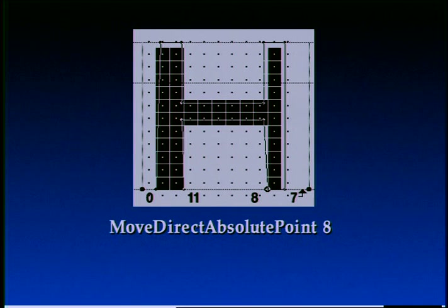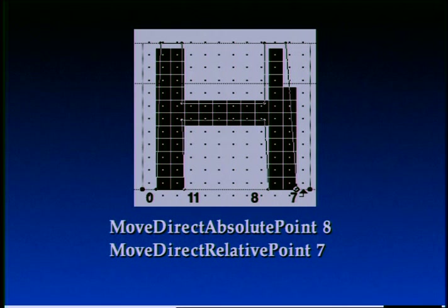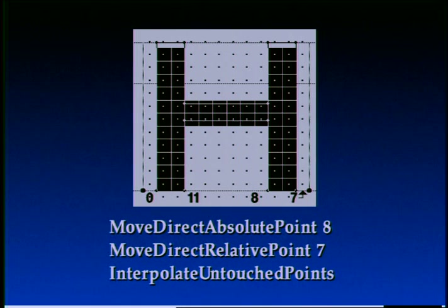Let us now look at how we solve the H with TrueType instructions. Set Vectors to Coordinate Axis X means that the next instructions will work on the x-coordinates of the control points. Move Direct Absolute Point 0 moves point 0 in the x-direction to the next grid boundary — equivalent to rounding the x-coordinate of point 0. This instruction also designates point 0 to be the reference point for the subsequent operation. Move Direct Relative Point 11 controls the distance from the reference point to point 11, rounding the distance between point 0 and point 11 and moving point 11 to the position reflecting that rounded distance. Another pair of Move Direct Absolute Point and Move Direct Relative Point is applied to points 8 and 7. After this, the distance between points 0 and 11 is equal to the distance between points 8 and 7, and this equality will hold true for all scale factors and sizes.